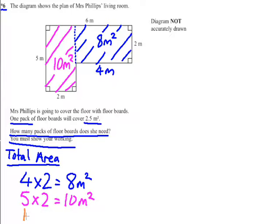So the total area would be 10 add 8. So the total area of this living room is 18m².